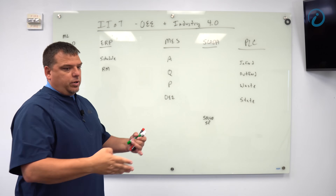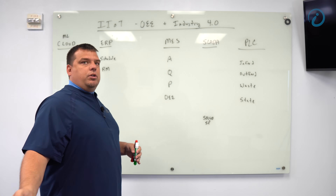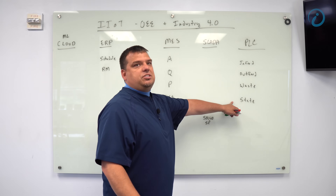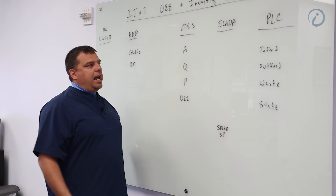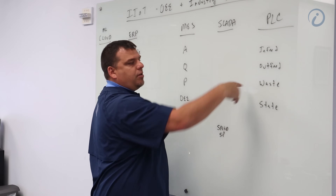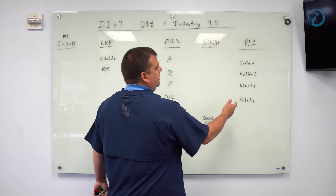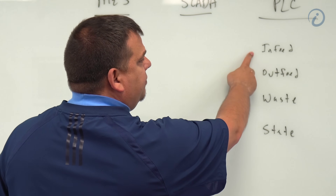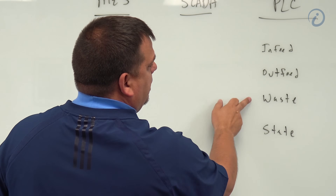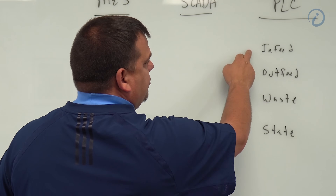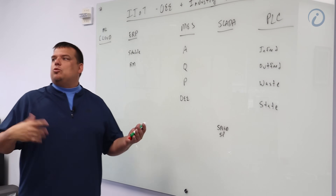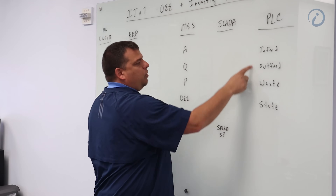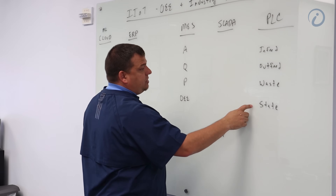That is: what's the total number of widgets fed into the machine, what's the total number produced going out, what was the total number of waste, and what's the state of the machine at any given time. If I have two of these counts, I can derive any third one. I can add outfeed and waste to get infeed, or subtract waste from infeed to get outfeed. Not every machine will have all of these, but they will have state.